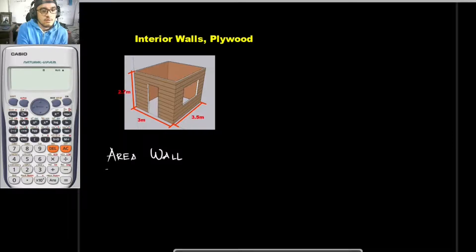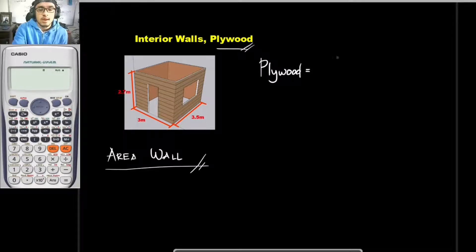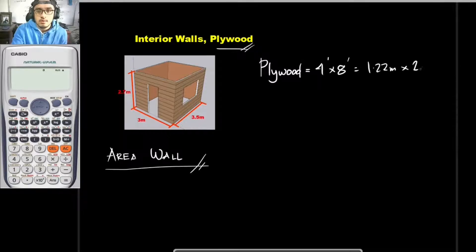After solving for the area of the wall, the next thing you should do is to determine the number of plywood based on the total area of the wall. Take note that the commercially available plywood has a dimension of 4 feet by 8 feet. If we convert this into metric, that is to be 1.22 meters by 2.44 meters.